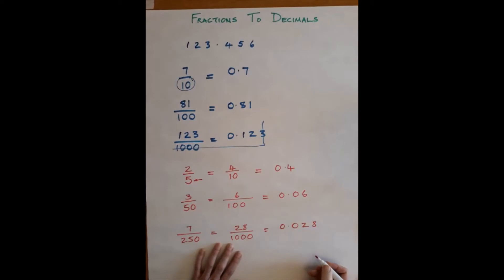So a quick reminder: this is your tenths column, this is your hundredths column, this is your thousandths column. Okay, so they're all nice and easy, very straightforward.